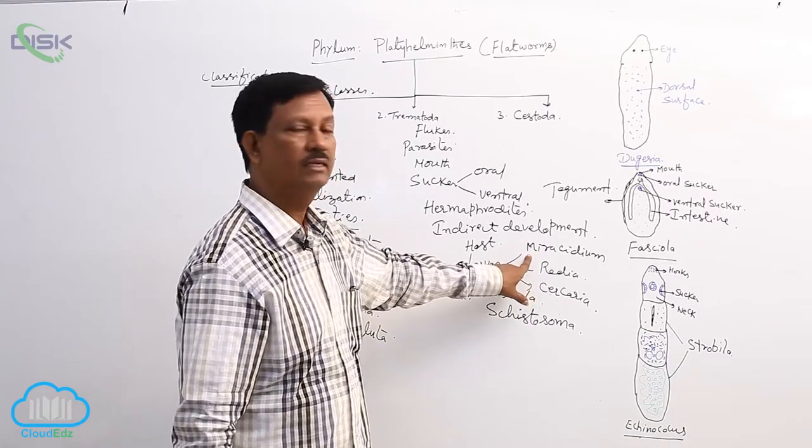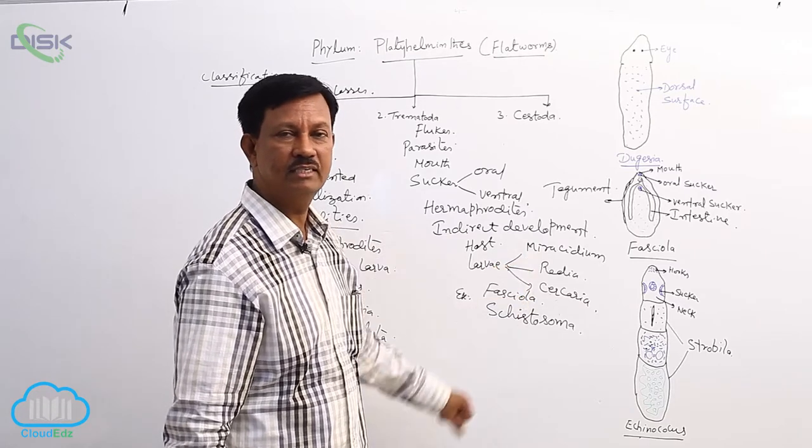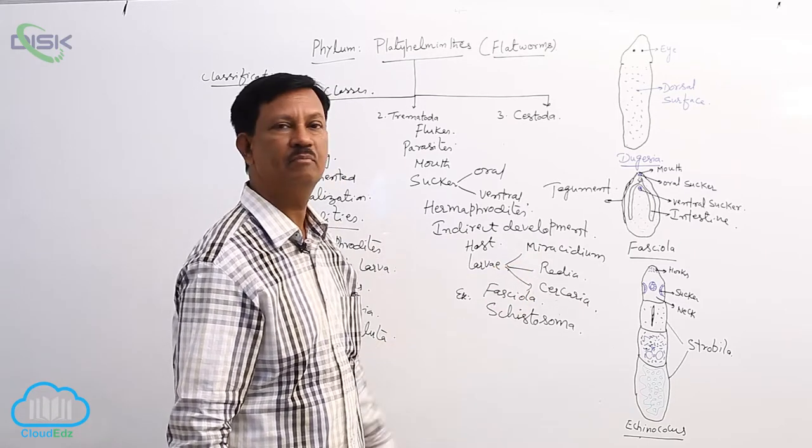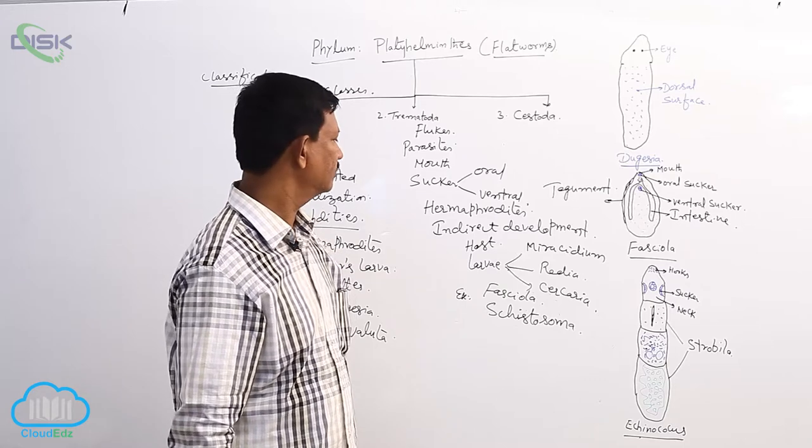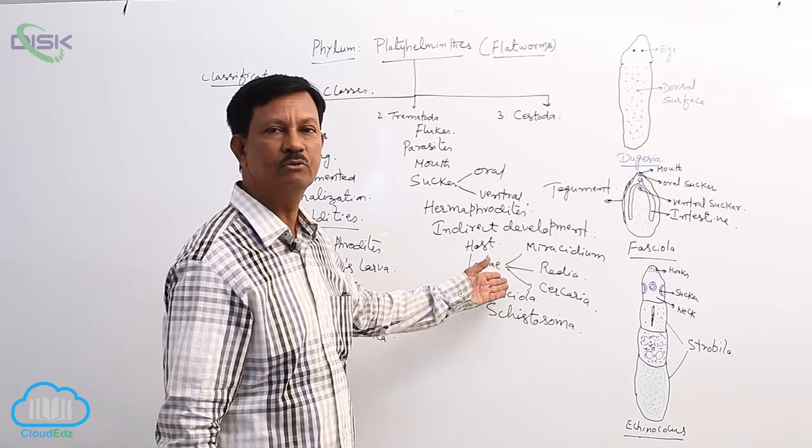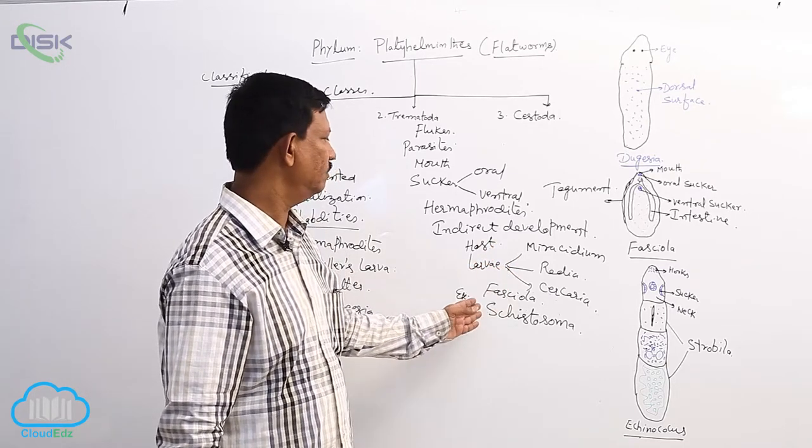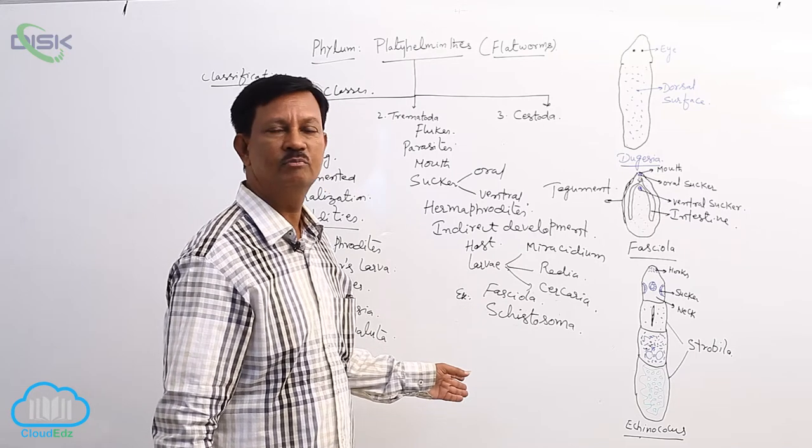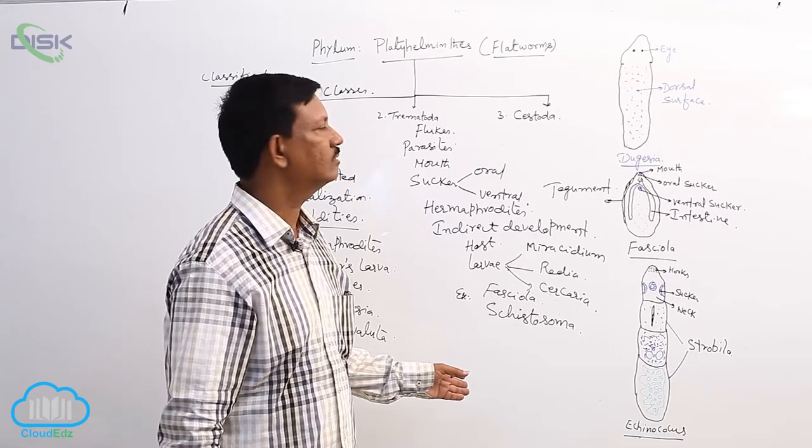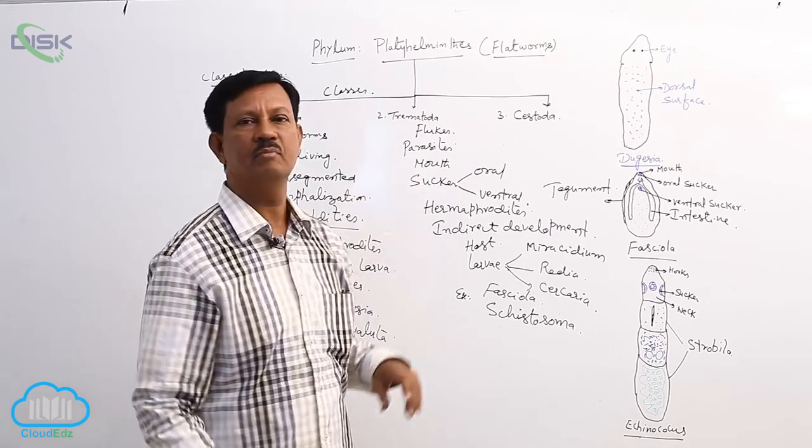4 to 5 larvae are present: Miracidium, Sporocyst, Radia, Cercaria, Metacercaria, etc. Sometimes they show polyembryony also. Examples are Fasciola hepatica, Schistosoma, Paragonimus lung fluke, etc. These all come under this class Trematoda.